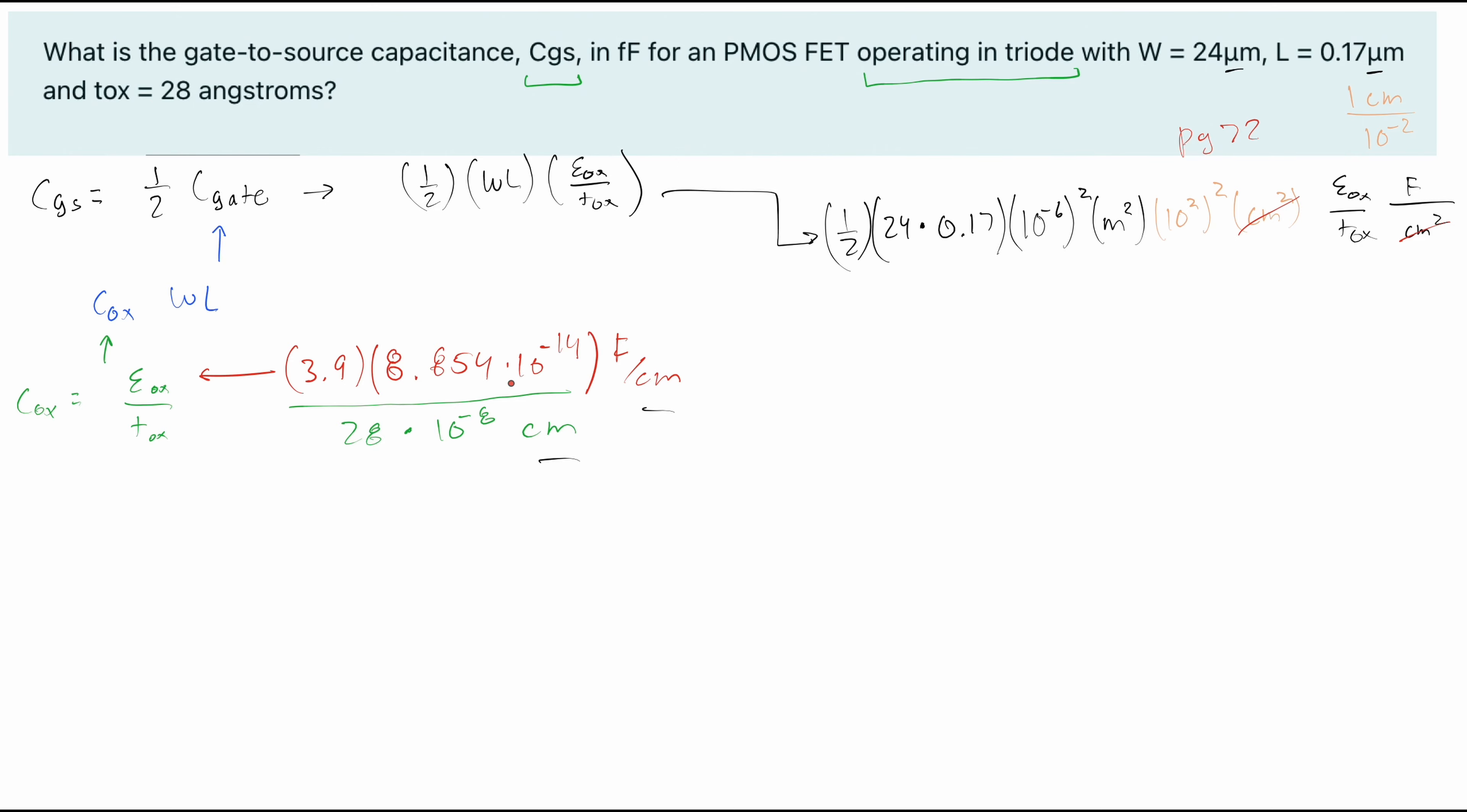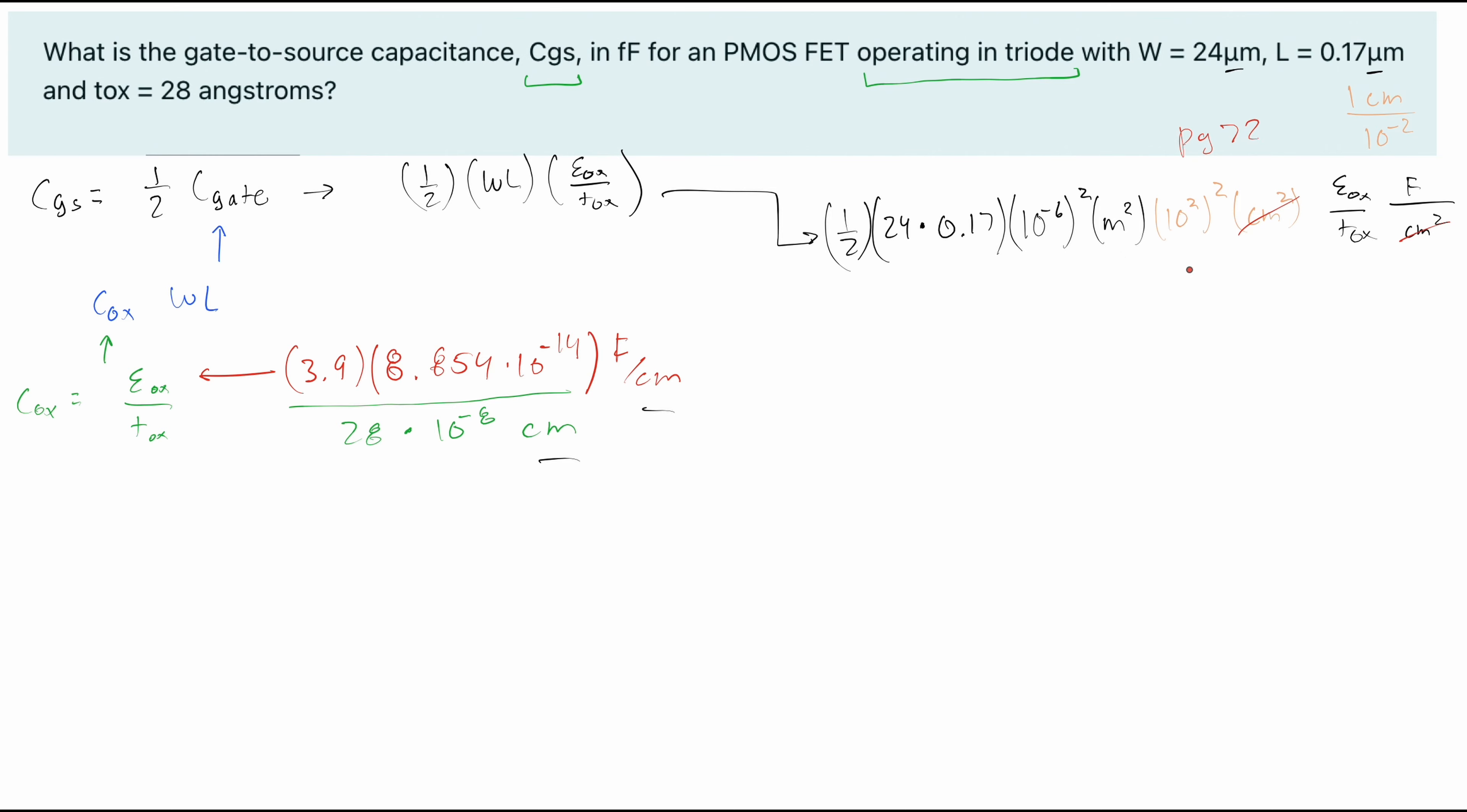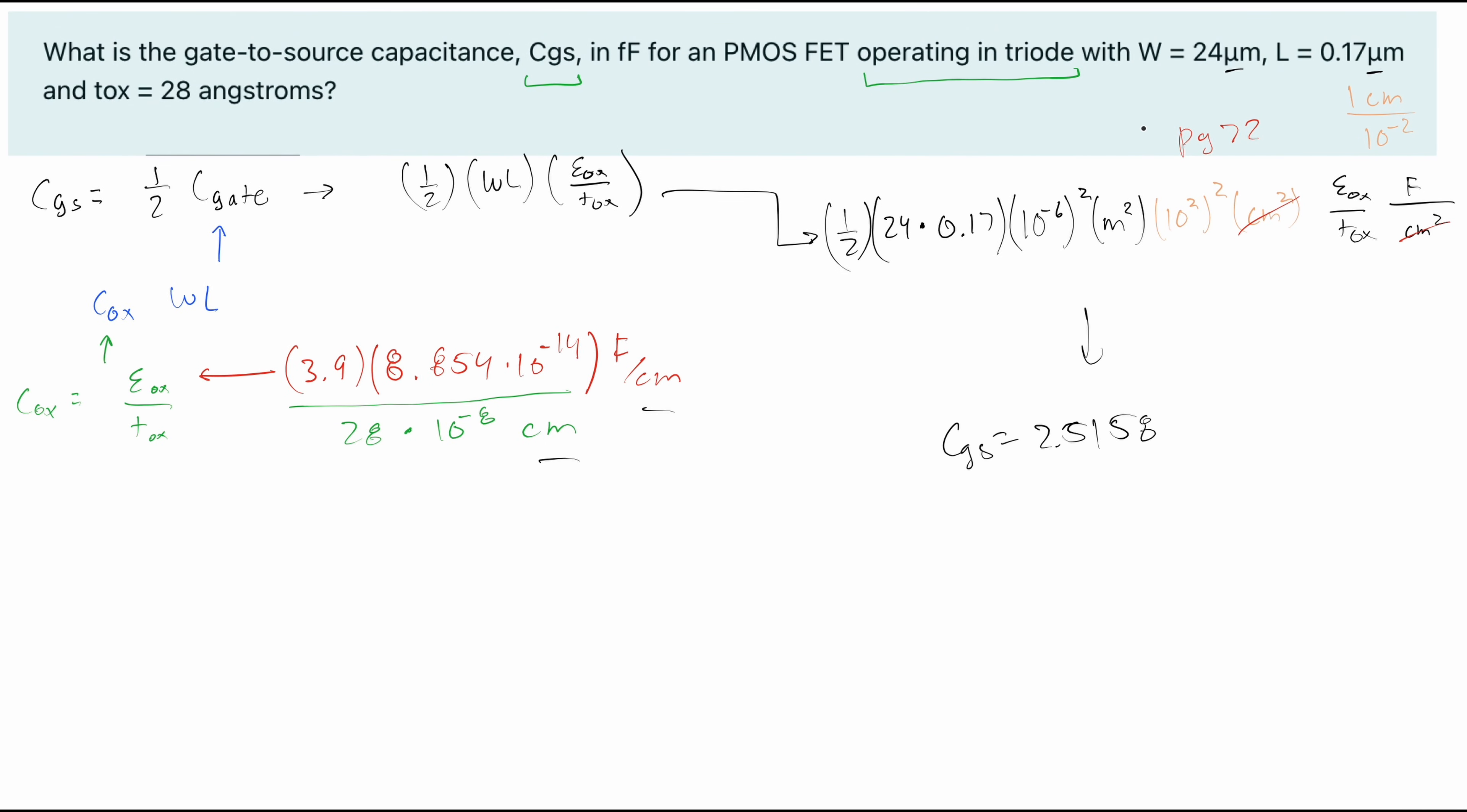When we multiply this out, we're going to have our one half right here. We are going to have the 24 times 0.17 right here. We have our 10 to the negative 6 squared right here. We have our 10 squared for the centimeters, so that's going to be this orange part right here. And then we have our E naught X, T naught X, so 3.9, 8.854, and then 10 to the negative 14. We have our 28 times 10 to the negative 8 centimeters. And that's going to give us 2.5158. And I made a slight mistake. When we convert this from the meters to centimeters, these meters squared is actually going to be gone because it's just going to be the centimeters squared. So we don't need to include the centimeters squared again, or the meters squared because it turns into the centimeters squared.